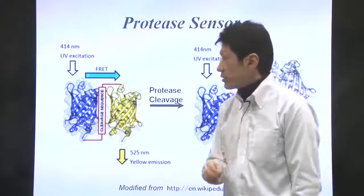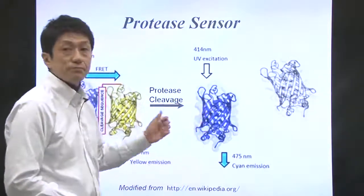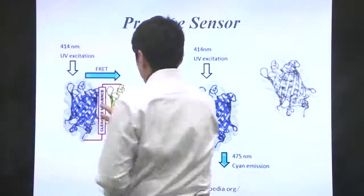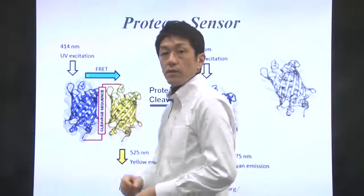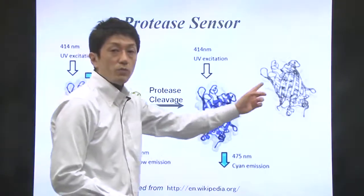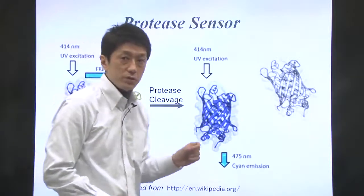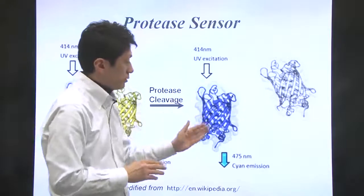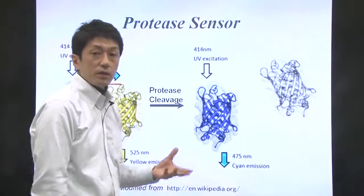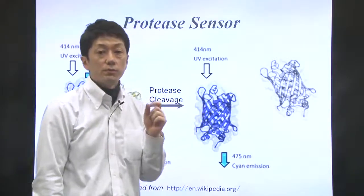In contrast, when the protease is active or present, the peptide linkage is digested and CFP and YFP are separated. FRET no longer happens, so you observe cyan emission only. By looking at the color, you can detect the activity of the protease.